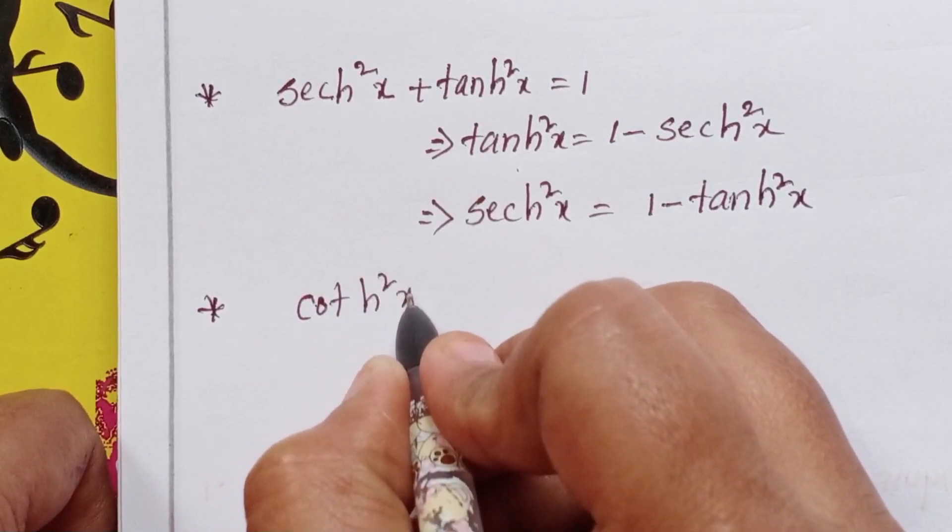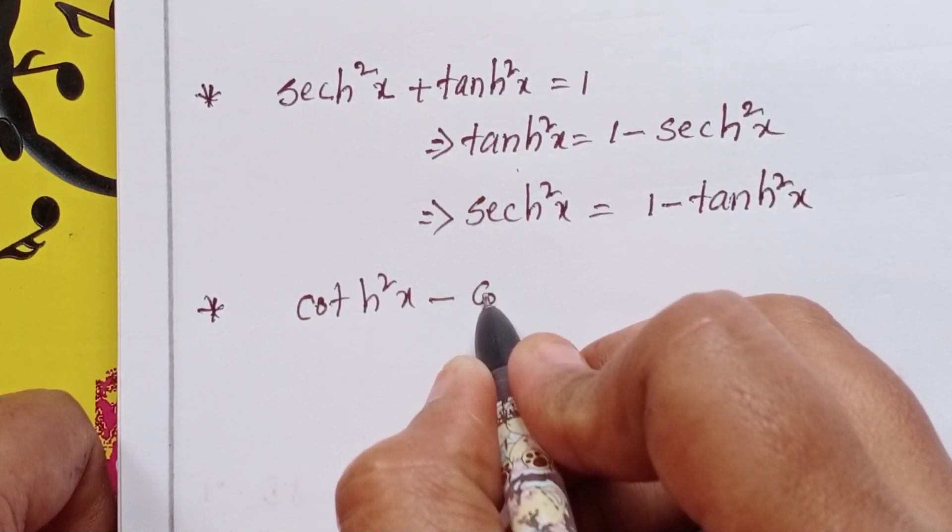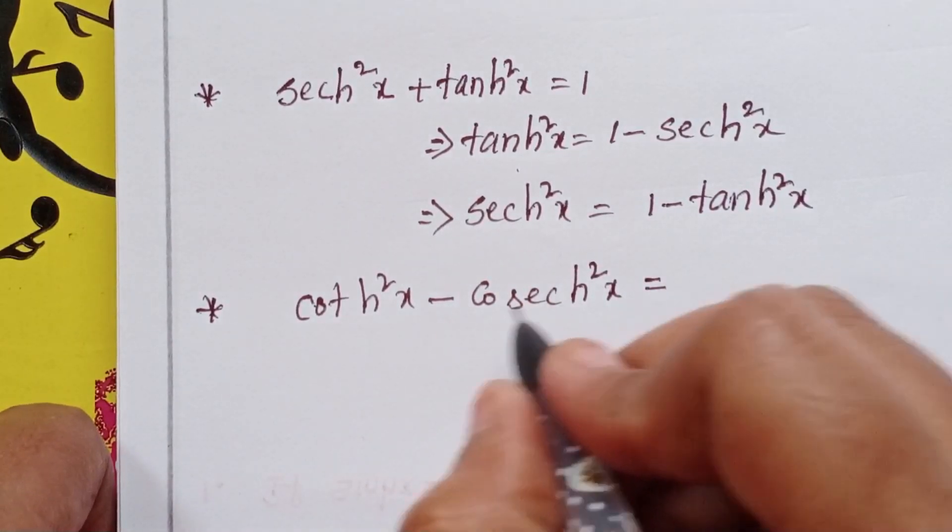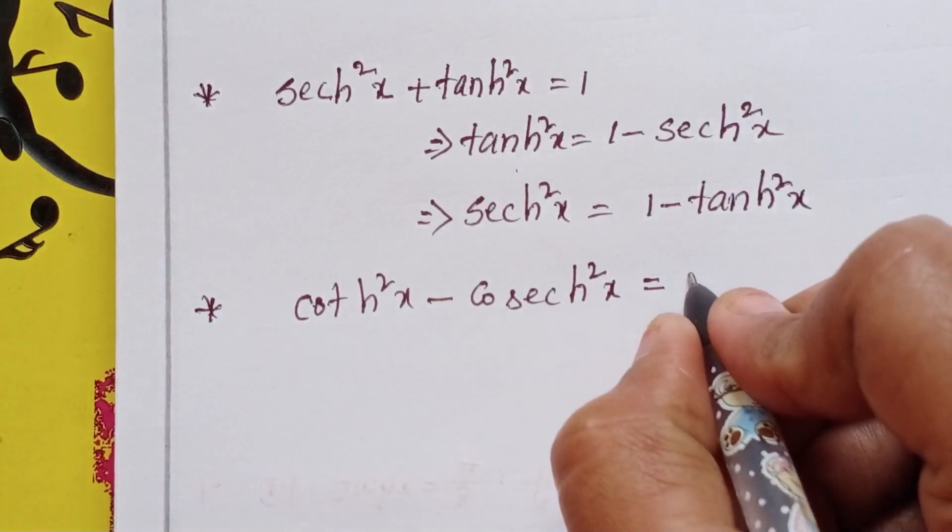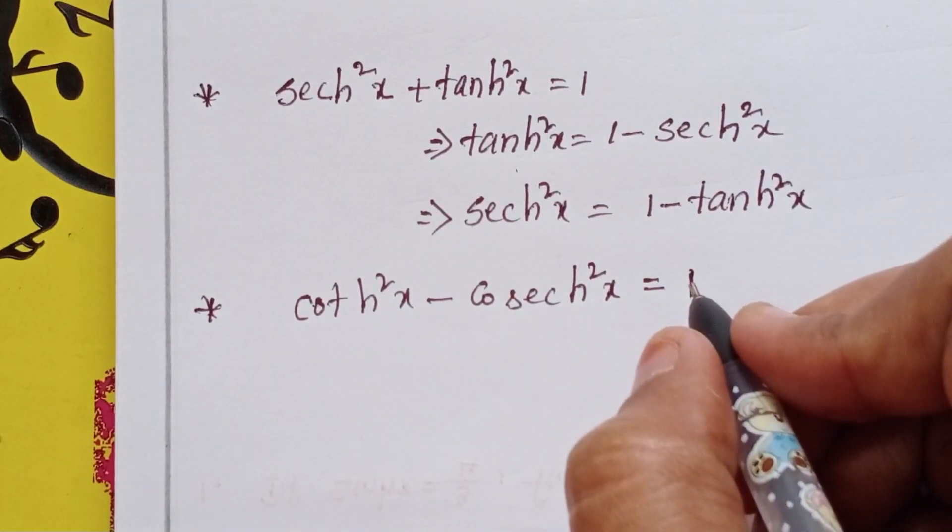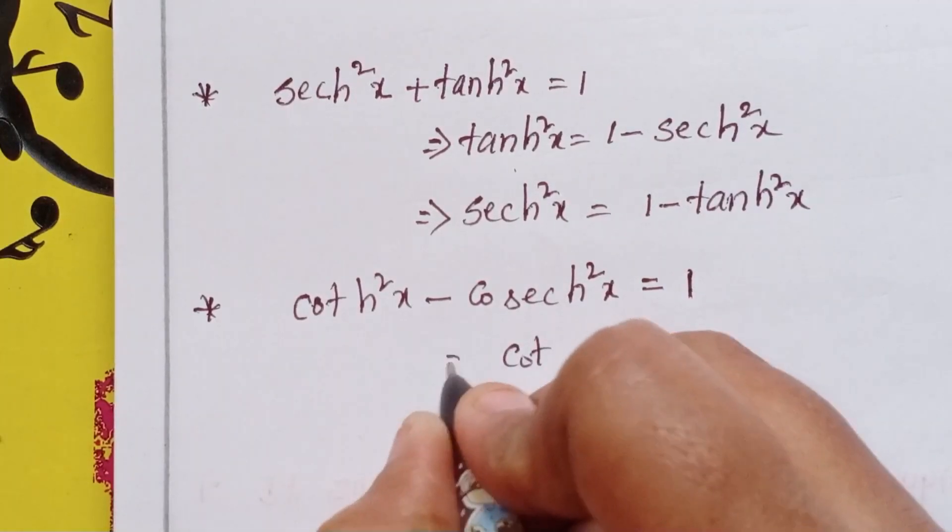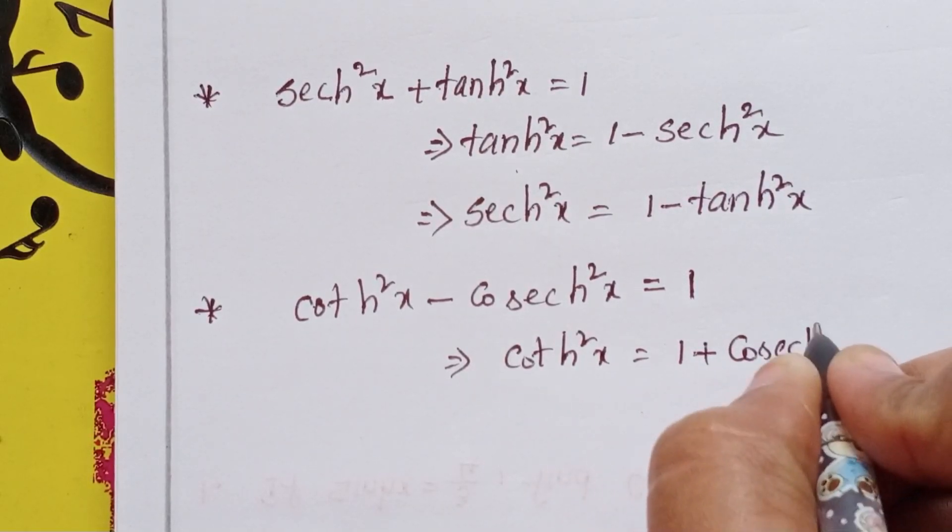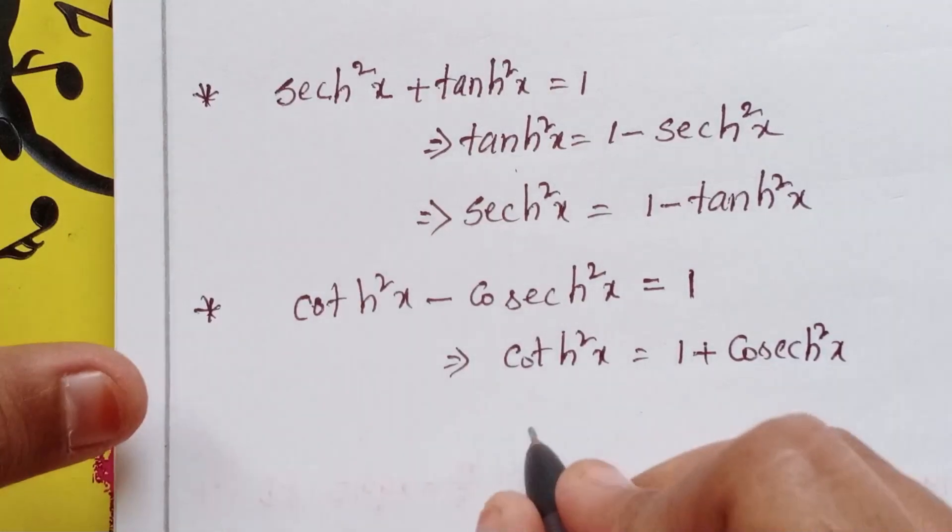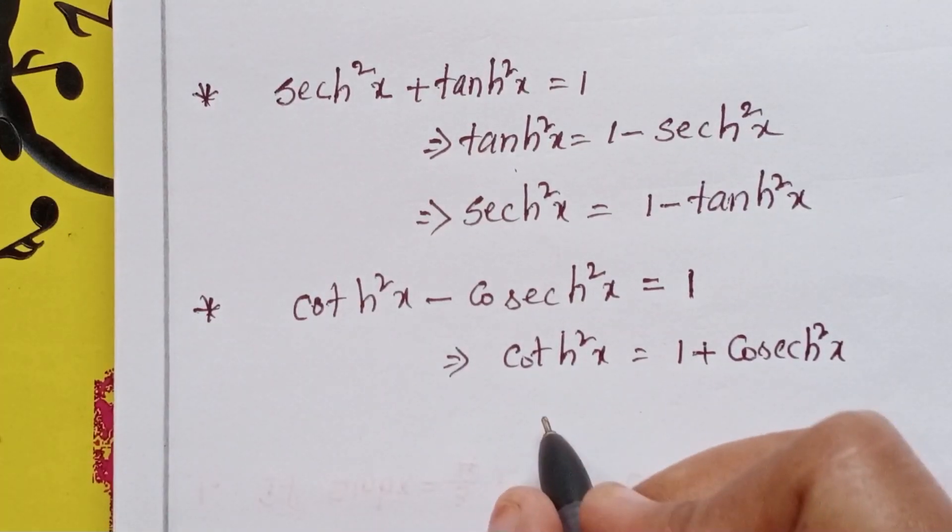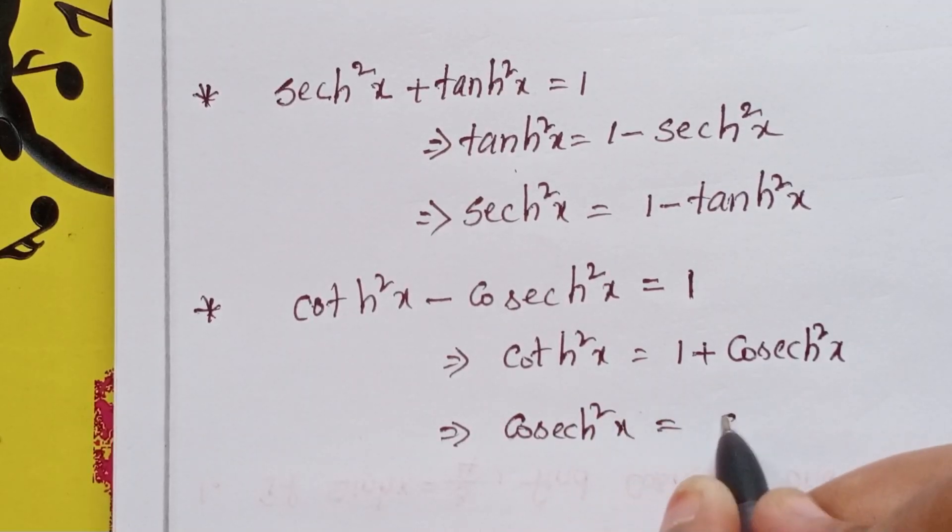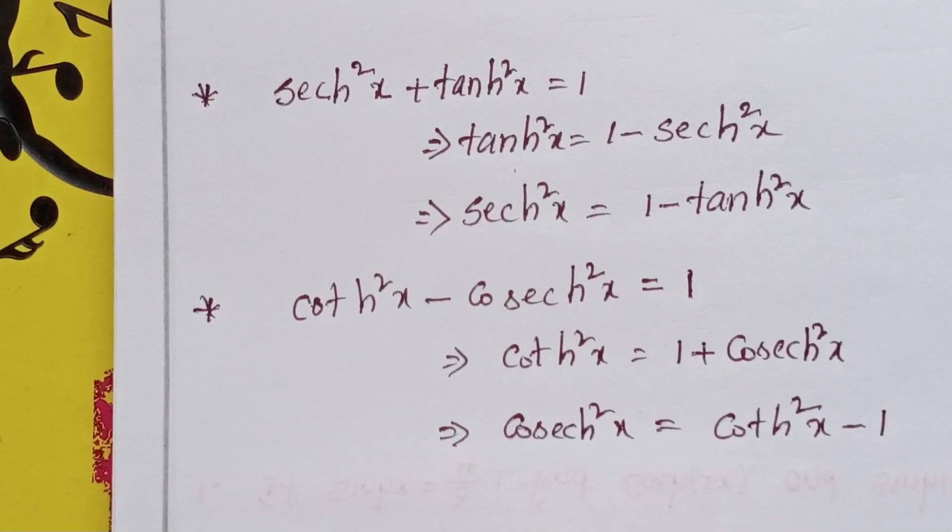Next, third one: cot h squared x minus cosecant h squared x equals 1. This gives cosh squared x equals 1 plus cosecant h squared x, not minus, equals 1. Cot h squared x equals 1 plus cosecant h squared x. Cosecant h squared x equals cot h squared x minus 1. These are identities.